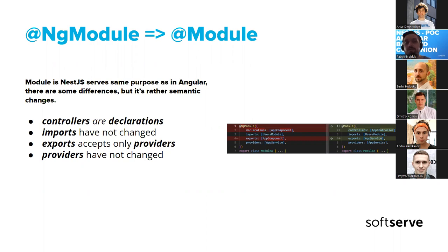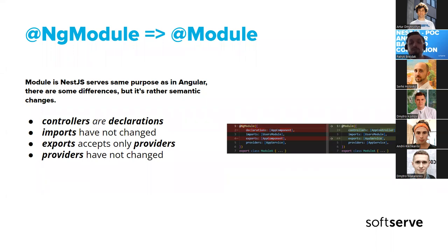The main difference is in declarations versus controllers, because in NestJS we don't have components — instead we have controllers, which are quite similar in that they handle communication with the user and pass data. Another difference is in exports: controllers cannot be exported to other modules like in Angular; we can only export providers.